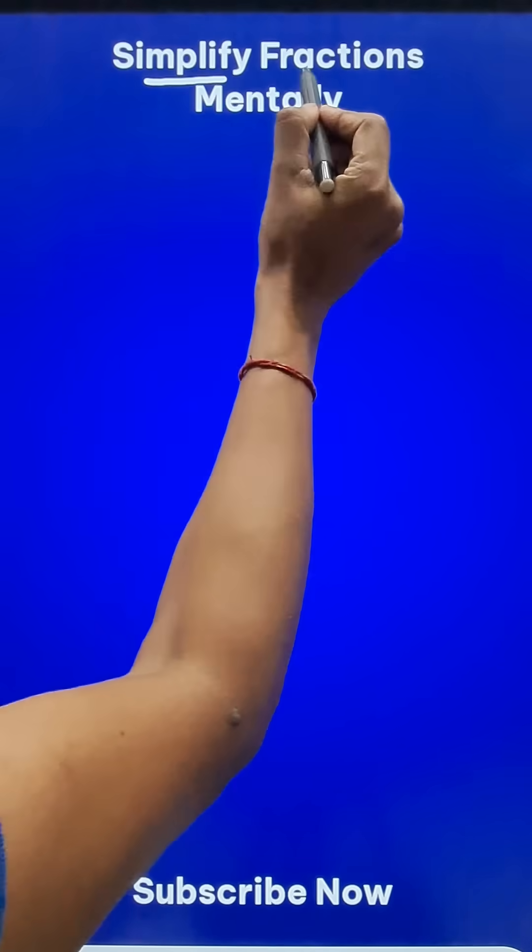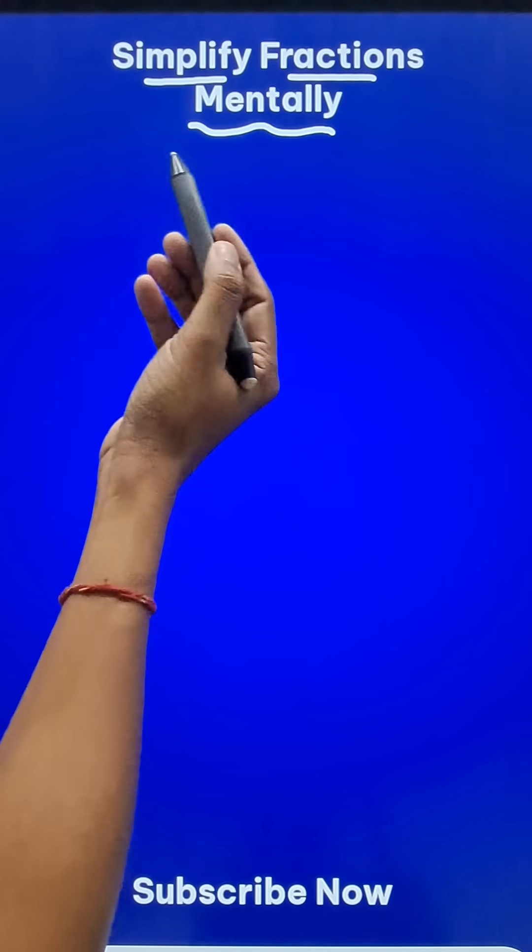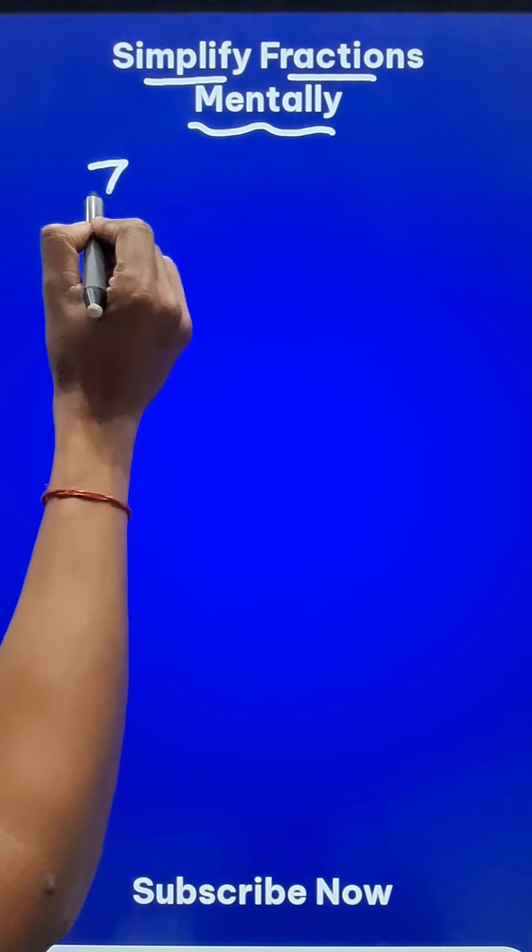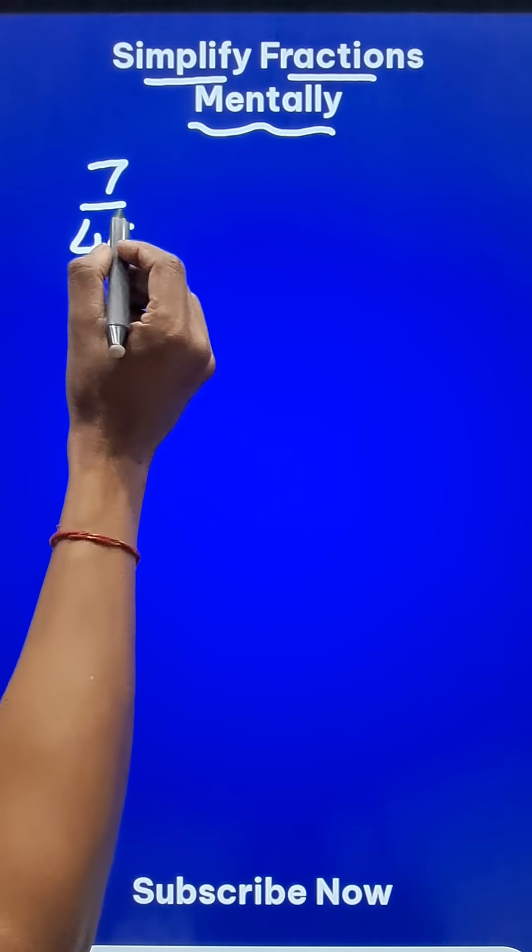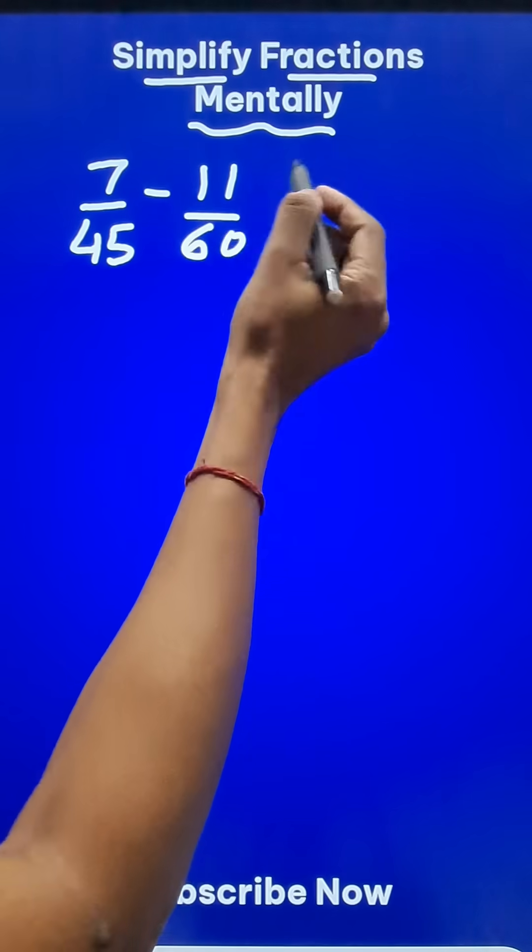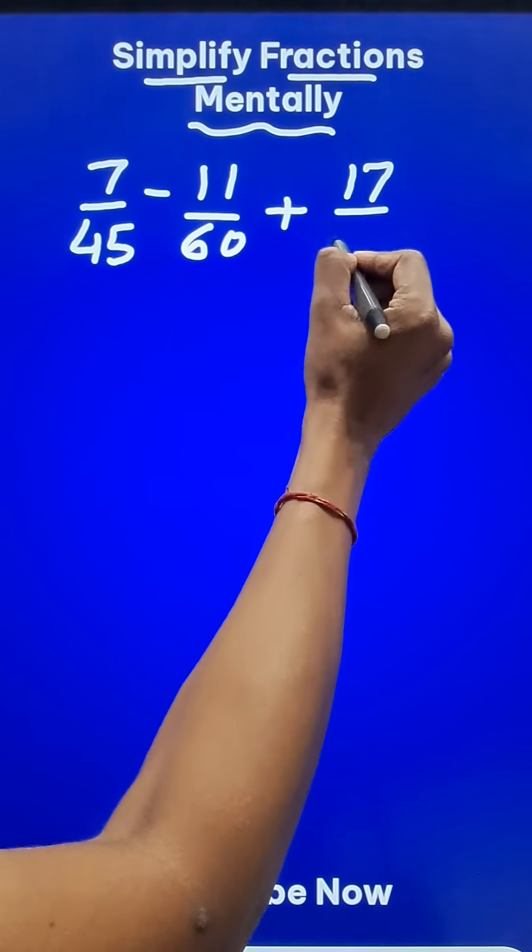Here is a direct method to simplify fractions virtually mentally. Look at these huge fractions: 7 upon 45 minus 11 upon 60, and then we have to add 17 upon 54 to that.